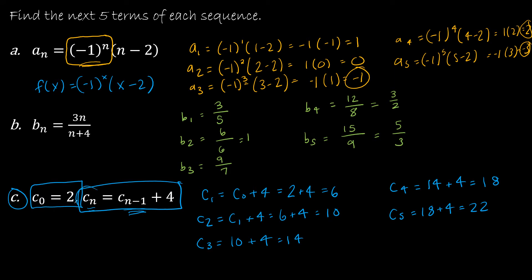Sometimes you're going to see it written like this, and sometimes you're going to see c sub n plus 1 is equal to c sub n plus 4. Both are perfectly acceptable — I prefer this notation.